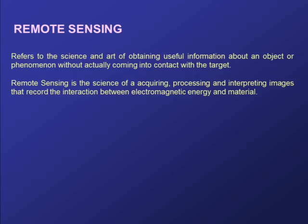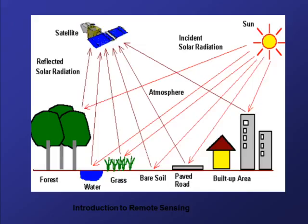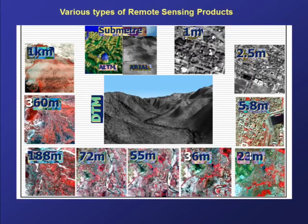The main important term of Geoinformatics is called remote sensing. Remote sensing is the science of acquiring, processing, and interpreting images that record the interaction between electromagnetic energy and materials. This is the process of producing remote sensing products called satellite pictures, which we will discuss in the next video. This is the output of remote sensing — satellite images.